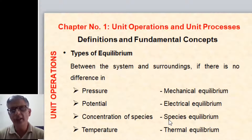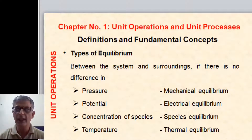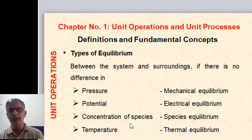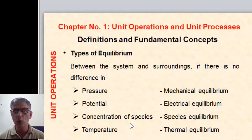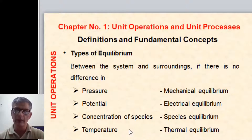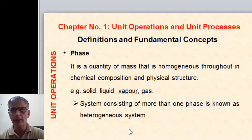If there is no difference in pressure across different regions within the system, we say there is mechanical equilibrium. If there is no difference in potential at any two points within the system, there is electrical equilibrium. If there is no difference in concentration of species at two different points, there is species equilibrium. If there is no difference in temperature at two different points, there is thermal equilibrium. Thermodynamic equilibrium implies all four: uniform pressure, potential, concentration, and temperature.